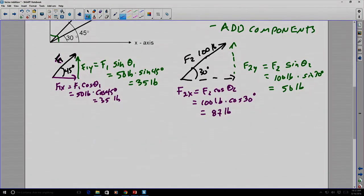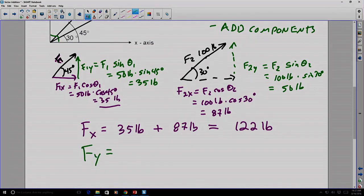So now that we've found the components of both of the forces we want to add, we can just simply add those two components together. For example, the total force in the x-direction is going to be equal to the 35 pounds from force 1x, plus the 87 pounds from force 2x. We add the two of them together, and that's 122 total pounds in the x-direction. Similarly, if we add the components in the y-direction, we can find the 35 pounds contributed by force vector 1, and the 50 pounds contributed by force vector 2 for a total of 85 pounds in the y-direction.